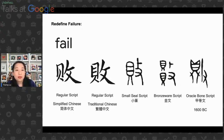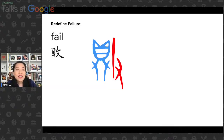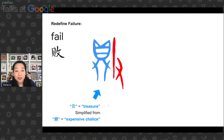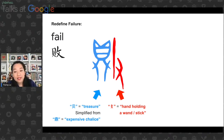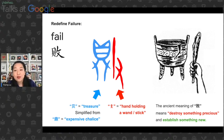Because I have Chinese origin, I also looked at the word fail from a Chinese perspective. In Latin, fail means 'deceive' or 'illusion.' In Chinese, if you look at the word from the regular script — coming from simplified Chinese, traditional Chinese — and trace it back to 1600 BC in the oracle bone script, the Chinese character for fail consists of two parts: the left part means 'treasure' (originating from the word for an expensive chalice), and the right part is a hand holding a wand or stick. So the Chinese meaning of fail literally means 'destroy something precious and establish something new' — it's actually quite a neutral word with nothing inherently bad or good.